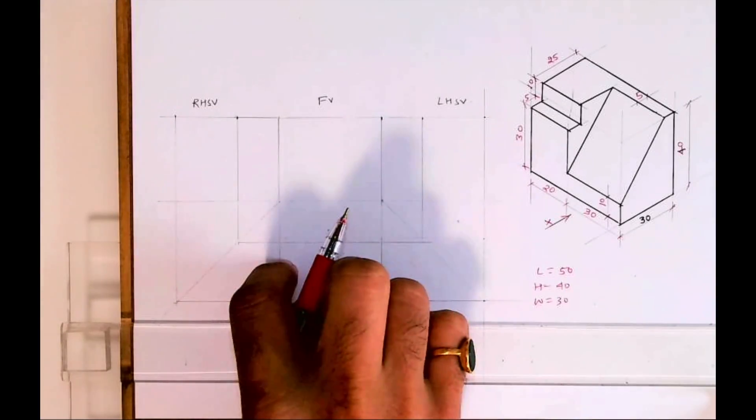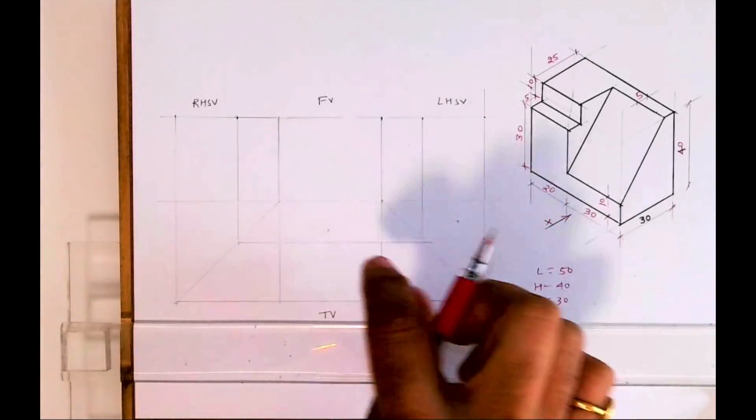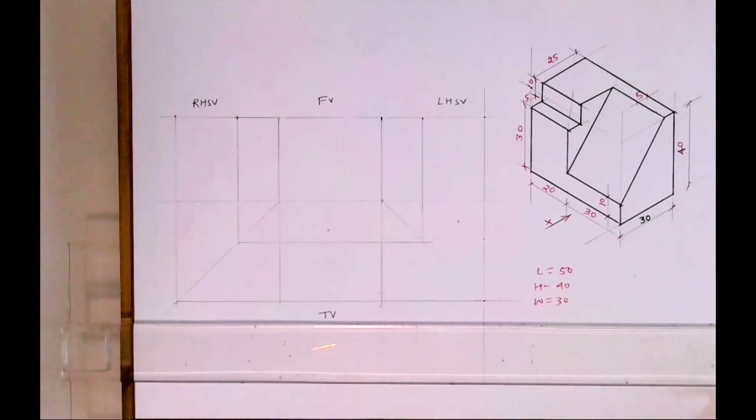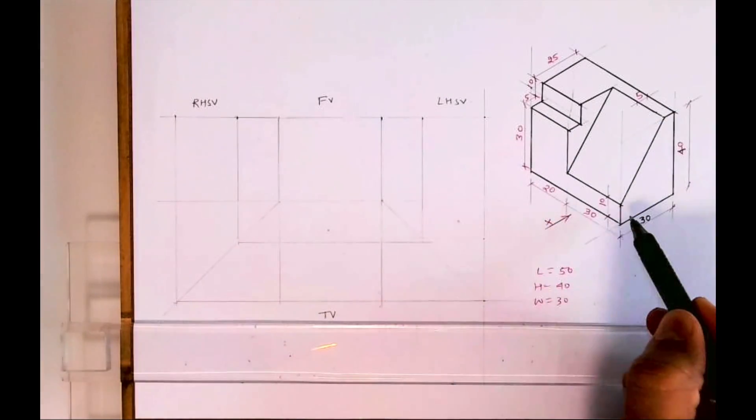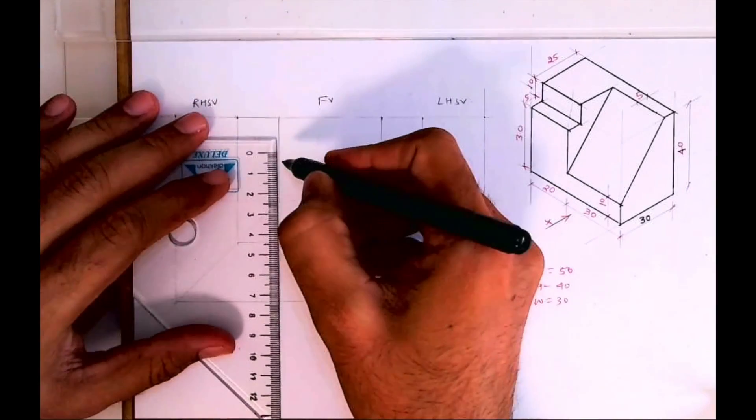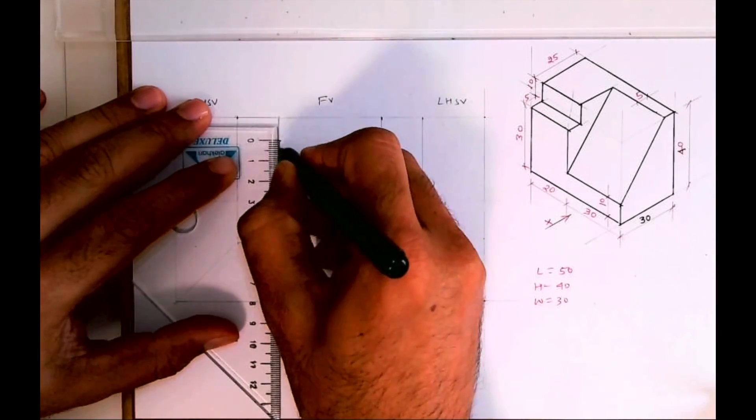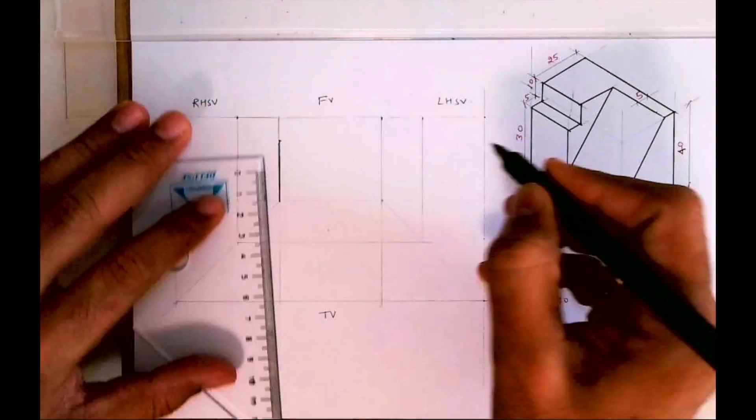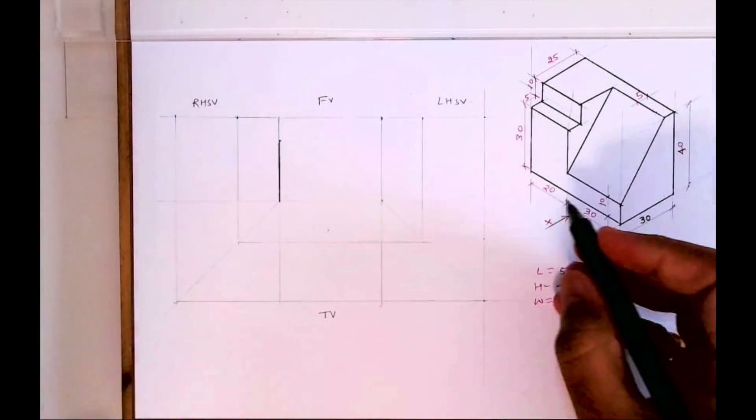So first we will draw layout. All of you know in front view length and height, in top view length and breadth, in side view breadth and height. We take 45 degree and we draw. Front view will see in this part L shape. Height is how much? 30. So I will take 30 mm, then this, then this 20.